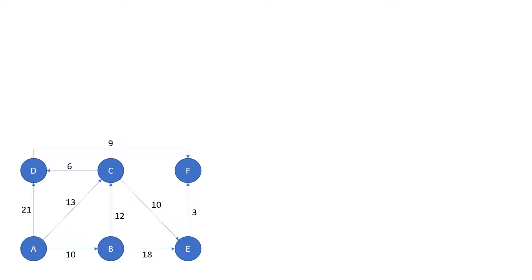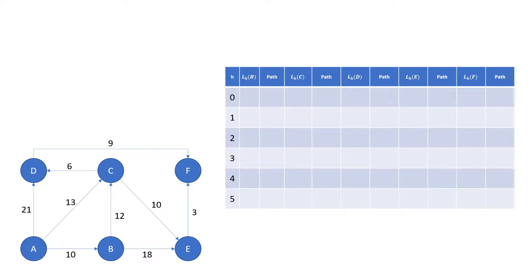We now need to introduce a table to perform all of the calculations to find the best path. The table will have the same number of rows as there are nodes in the network. We also have one column for the length of the route to each node as well as the path this route takes.